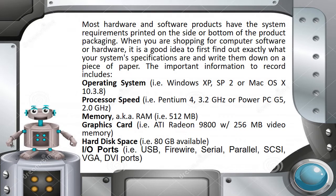Most hardware and software products have their system requirements printed on the side or bottom of the product packaging. When you are shopping for computer software or hardware, it is a good idea to first find out exactly what your system's specifications are and write them down. The important information to record includes operating system, processor speed, memory, graphics card, hard drive space, and input-output ports.